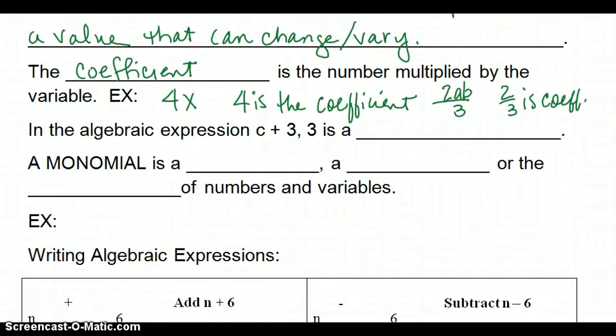In the algebraic expression c plus 3, 3 here is called a constant. It does not vary. It does not change. 3 will always stay 3, so that makes it a constant.